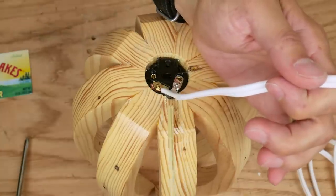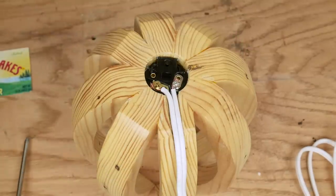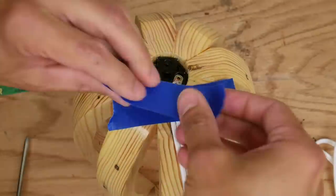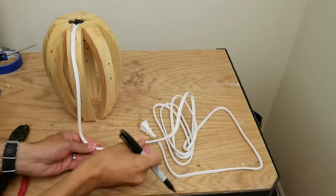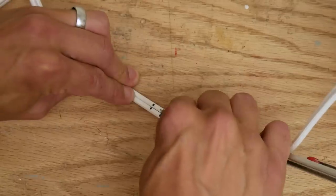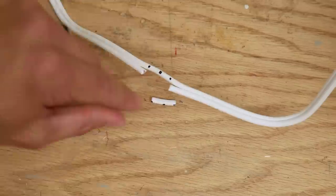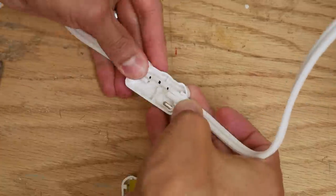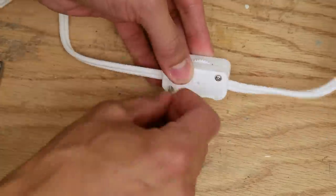And I used some more epoxy to attach the cord to the groove I sanded. I marked where I wanted the switch and wired it up following the instructions that came with it. Different switches have different instructions but they're usually easy to follow.